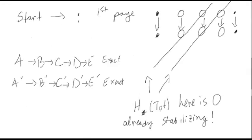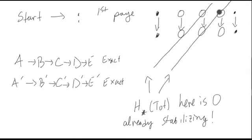Now let's use these ideas to quickly prove the five lemma. We look at where we start with horizontal arrows and move downward in our sequence. We first take the homology of the horizontals. Because the top row and the bottom row are exact, we get zeros here and zeros there. That tells us right away that the homology of the total complex at those locations will be zero.